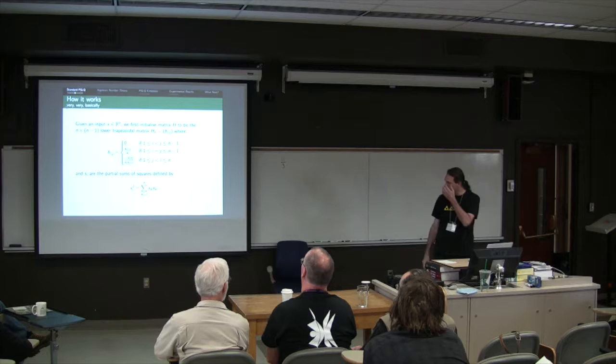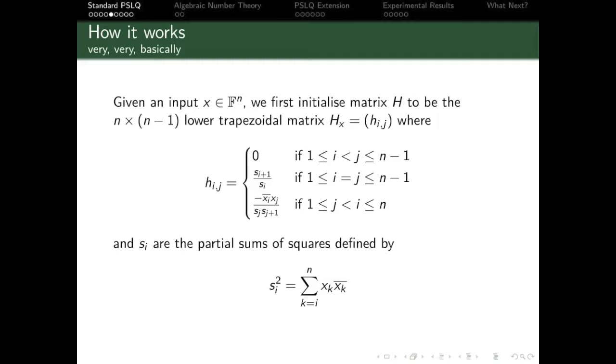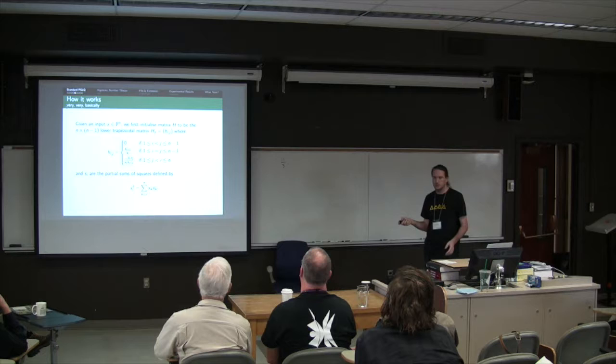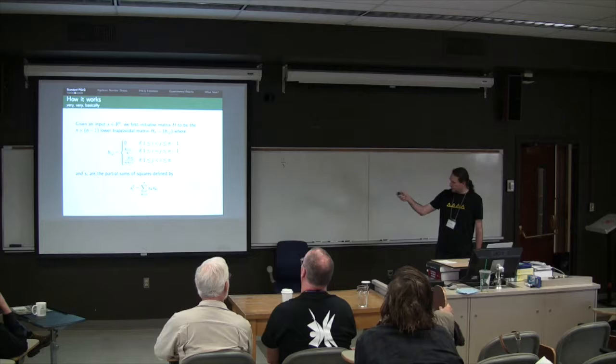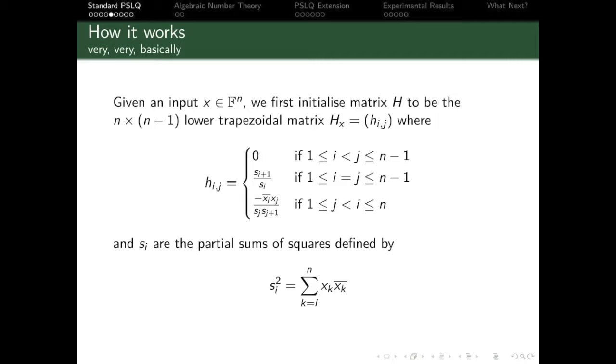So if we take an input, an n-dimensional vector in our input field, the first thing we do is we initialize a matrix which we call H to be the n by n minus one lower trapezoidal. If you know about lower trapezoidal, just think lower triangular. It's just if you generalize the idea of lower triangular to a non-square matrix, you get lower trapezoidal. And if you draw a couple pictures, you'll see why. So in the following lower trapezoidal matrix defined by these terms,